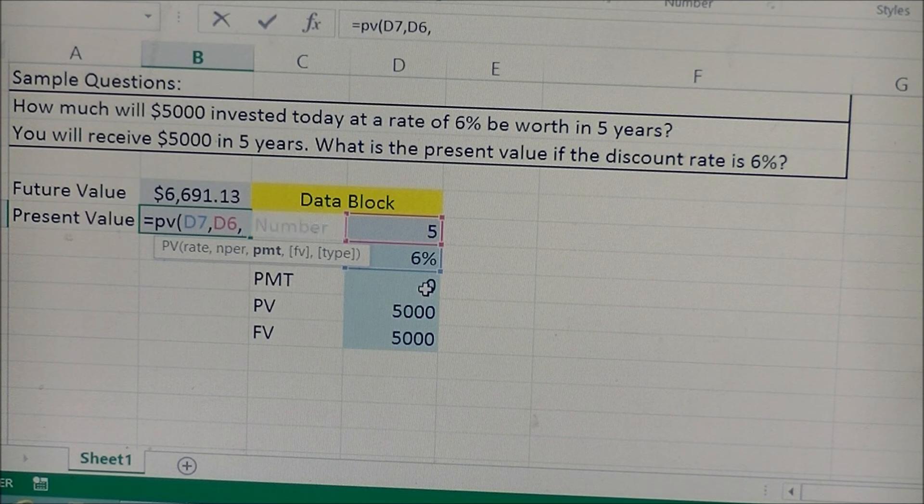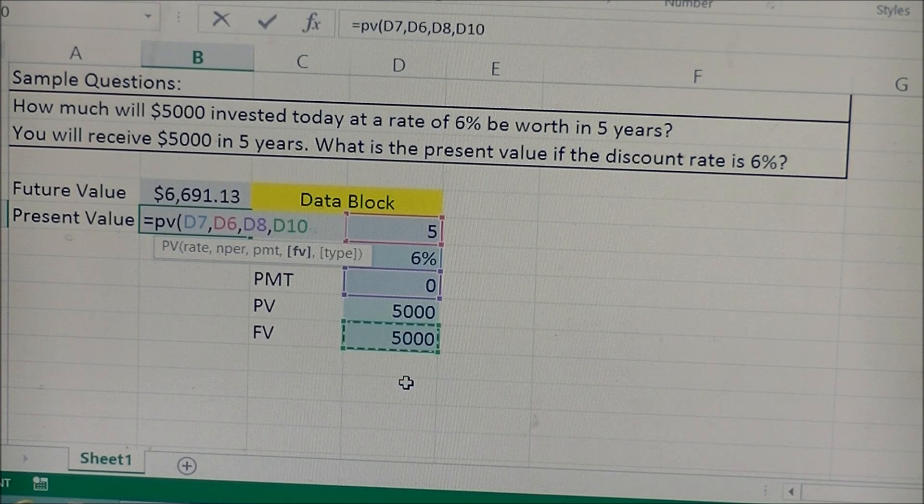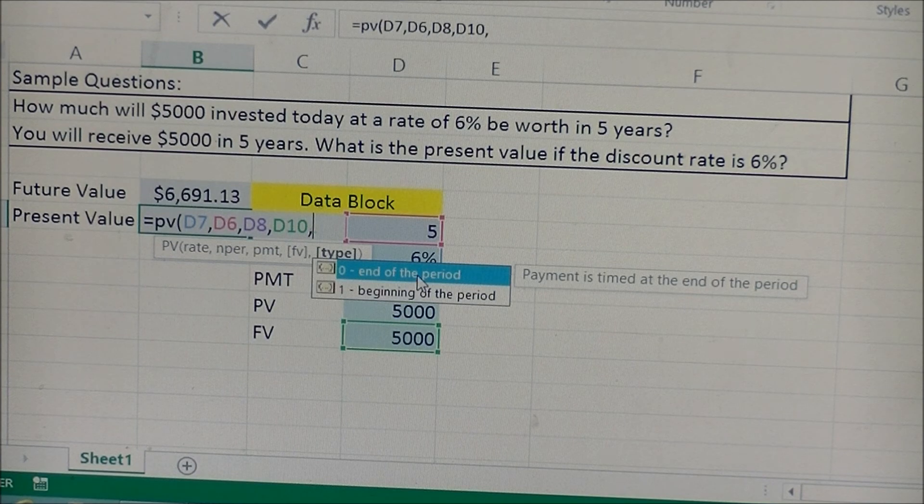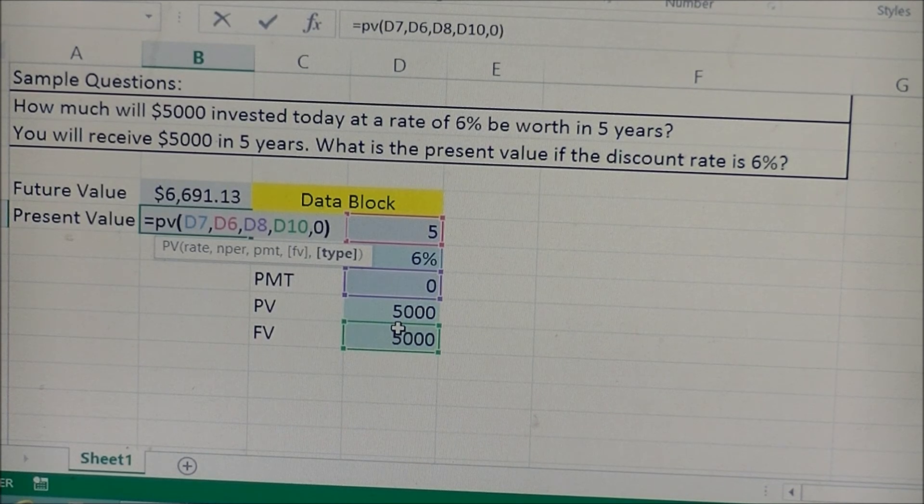And then we're going to click on payment, which is zero, separate it with a comma. And they're now asking for the future value, so this time we're going to click on the $5,000 for the future value. And we want to know at the end of the period, so click on that, close the parenthesis.